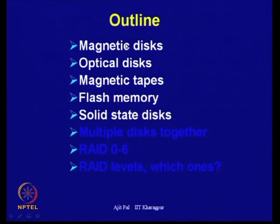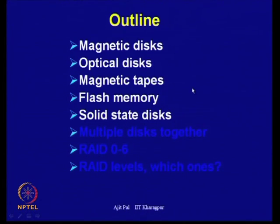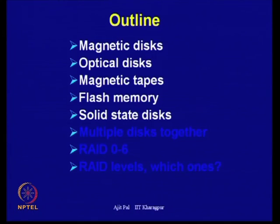We shall discuss different types of devices used in secondary storage, like magnetic disks, optical disks, magnetic tapes, flash memories, and nowadays solid state disks. In another lecture, we shall discuss how we can improve reliability by using multiple disks together and different RAID levels, level 0 to 6. Today, let us primarily focus on the different types of technologies used to build secondary storage.